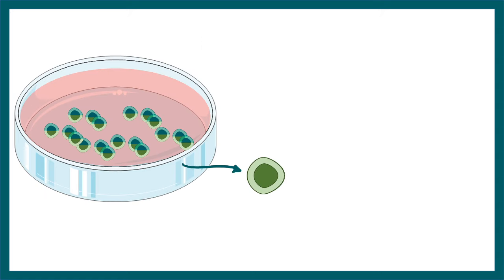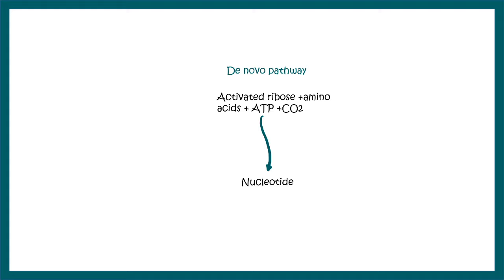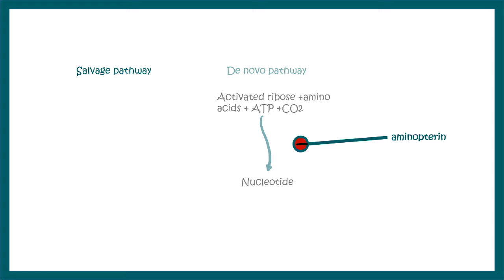Inside a cell, nucleotides can be generated using two pathways: the de novo pathway and the salvage pathway. The de novo pathway uses all the ingredients in the cell to make nucleotides from scratch. However, the aminopterin present in the HAT media would block the de novo pathway by blocking a key enzyme in this process known as dihydrofolate reductase (DHFR).